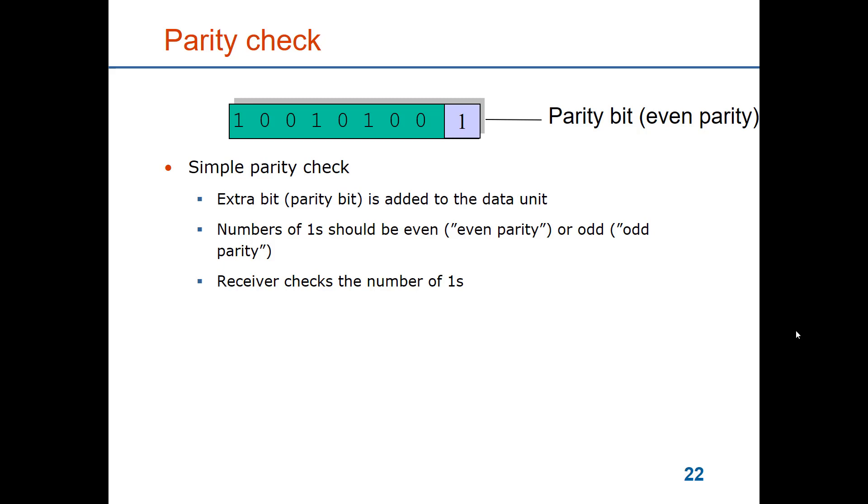The only importance is that the sender and the receiver agree which format is used. The receiver will take the data plus the redundancy and compute the same function. If there is even parity and they receive an even number of ones, then it decides that the data is correctly received.